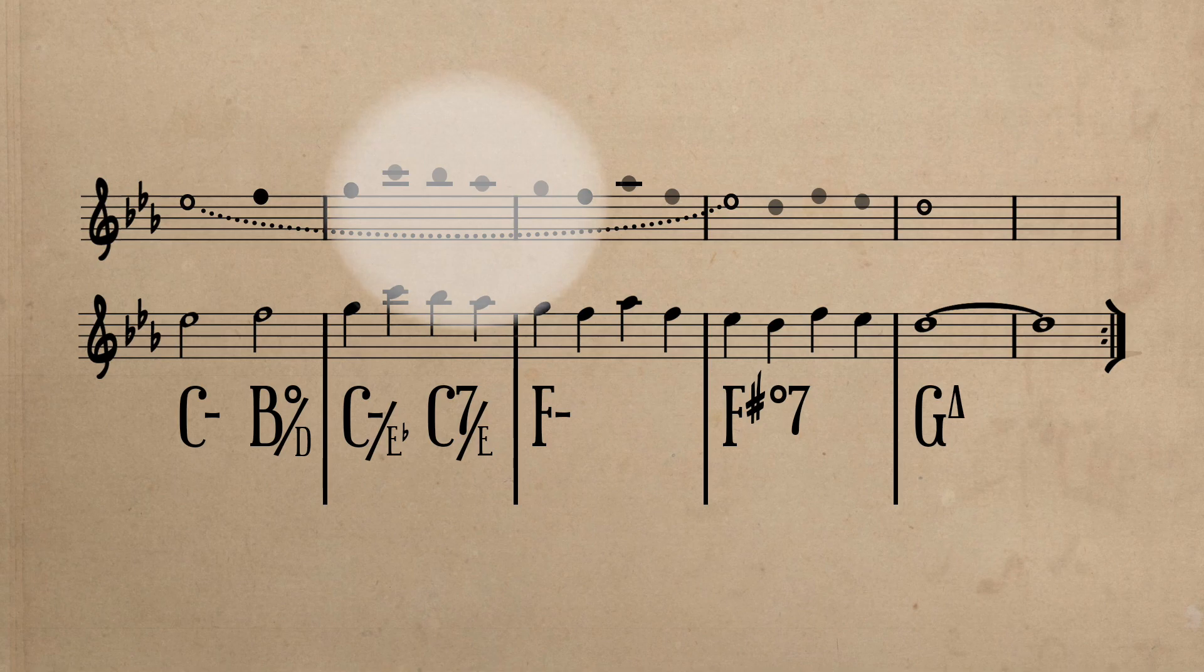the return to G occurs on beat 1 of the third measure, creating a 9-8 suspension, delaying the arrival of F until beat 2 of the third measure. Upon arriving to F, we hear it embellished by a leap to and from A flat.